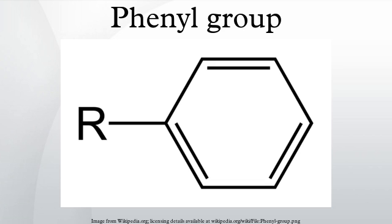Many or even most phenyl compounds are not described with the term phenyl. For example, the chloro-derivative C6H5Cl is normally called chlorobenzene, although it could be called phenyl chloride. In special cases, isolated phenyl groups are detected: a phenyl anion, a phenyl cation, and the phenyl radical.